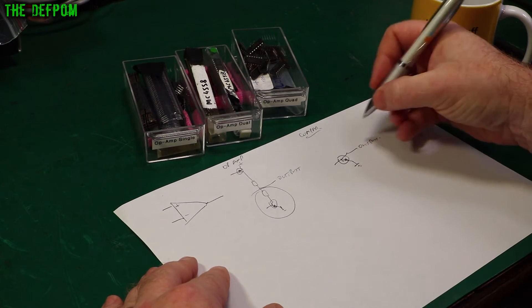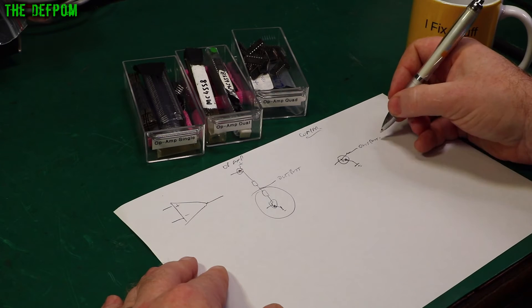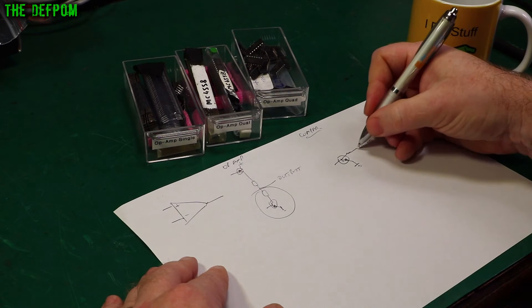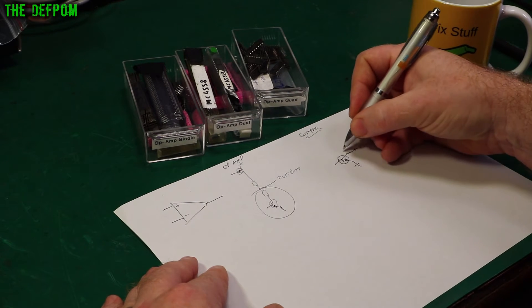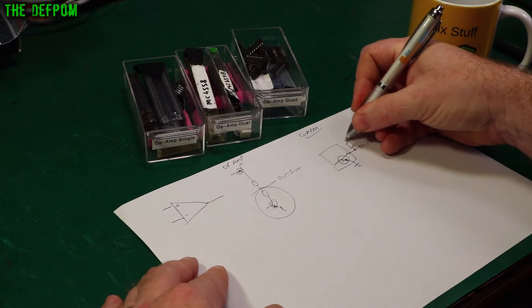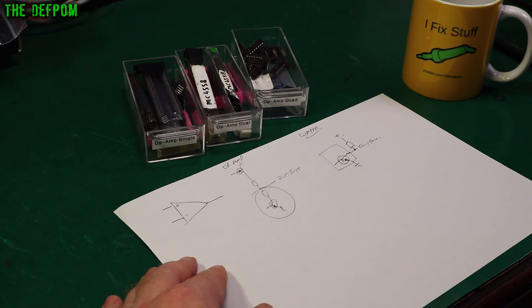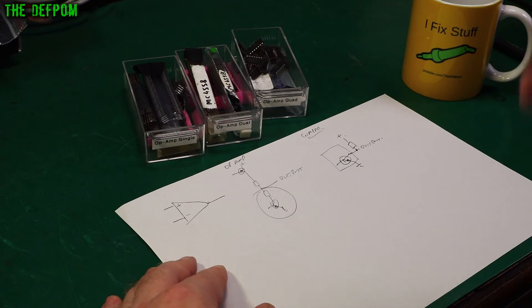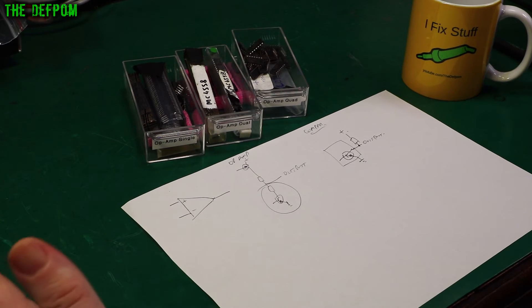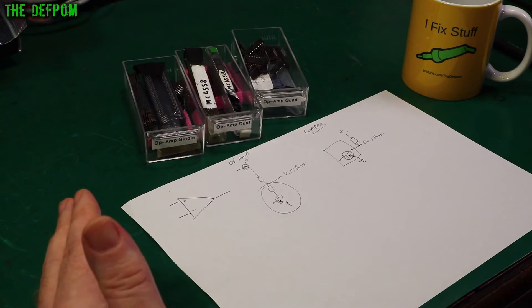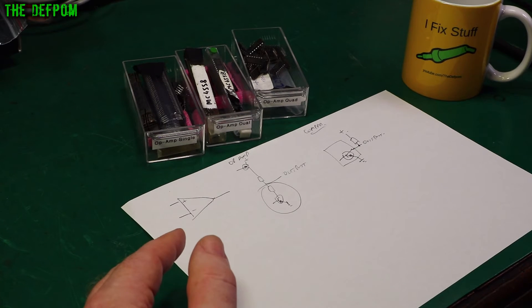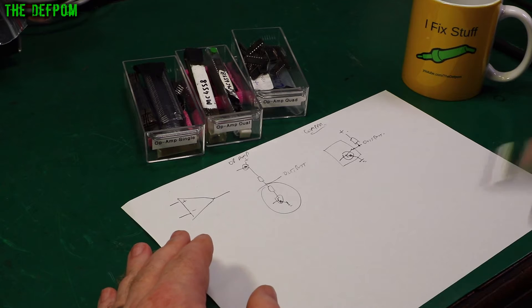Now obviously in this case a comparator is an open collector output which means it's pulled down to ground when it's active. So on the output of the device you'd put a pull up resistor to wherever the positive rail would be and that gives you zero volt and positive state. There's loads of op-amp circuits available. If you look on Google for op-amp circuits you'll see different variations.